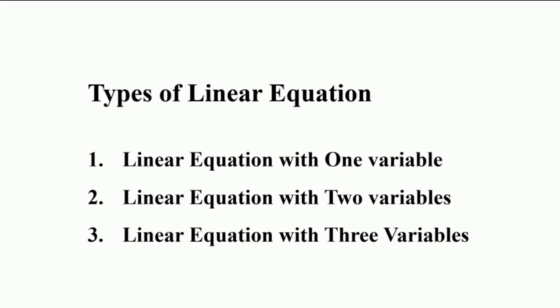There are different types of linear equations. The first one is a linear equation with 1 variable, meaning 1 unknown variable. Secondly, we have a linear equation with 2 variables or 2 unknowns. And thirdly, we have a linear equation with 3 unknown variables.